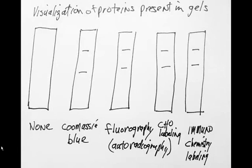If you visualize proteins in a gel, no staining, you can't tell where the proteins are. If Coomassie Blue, it stains all the proteins. If you use some type of radioactive detecting system, only those that are radioactive will be seen. Carbohydrate labeling, only those with sugars will be seen.